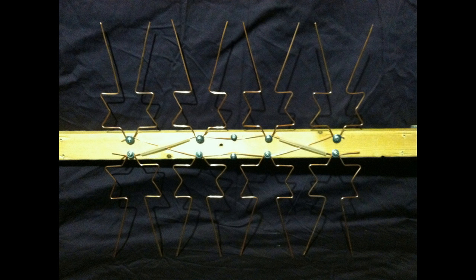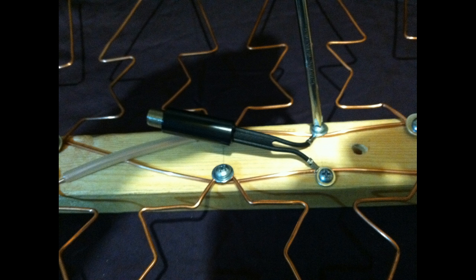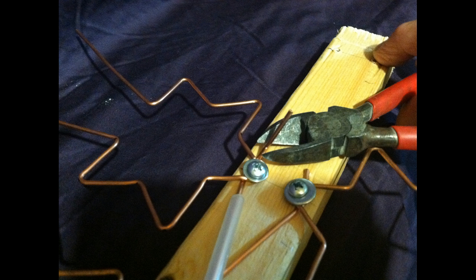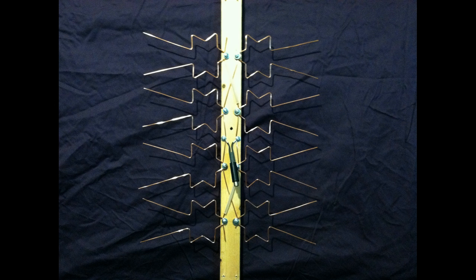Once we get all of our elements installed, it will look like this. Next, we'll install the matching transformer at the center screws. And then we'll trim off the excess from the lead wires. And this is what it'll look like when we're done.